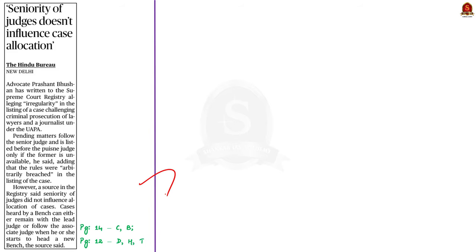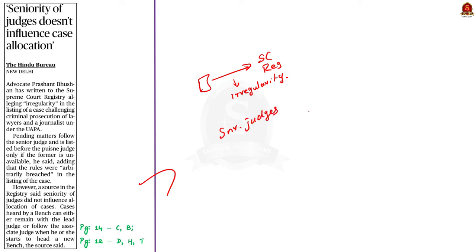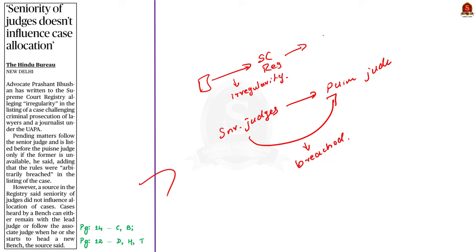Look at this article. Recently, an advocate in the Supreme Court wrote a letter to the Supreme Court registry, alleging that there is an irregularity in the listing of cases. The advocate said that pending cases should be allotted to senior judges, and cases can be listed before junior judges only if senior judges are not available. However, the Supreme Court registry rejected this allegation, saying there is no influence in the allocation of cases.